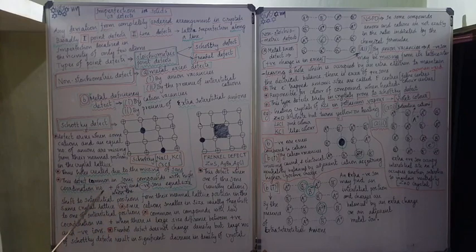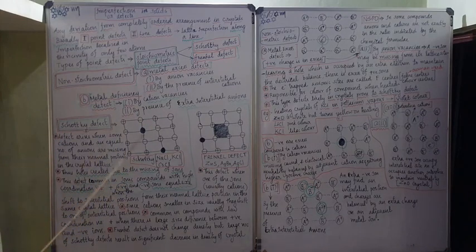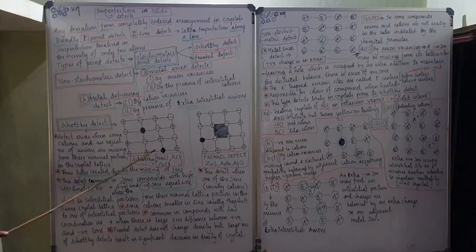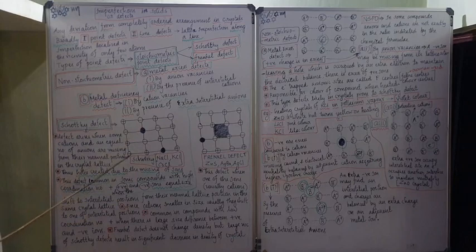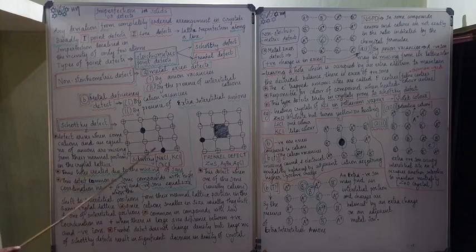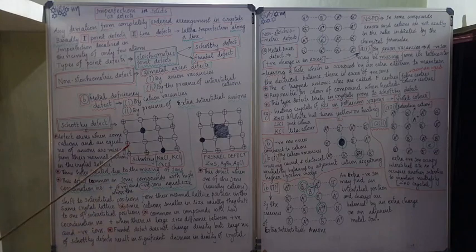Schottky defect arises when some cations and an equal number of anions are missing from their normal lattice positions, creating holes. This defect is common in ionic compounds with a high coordination number — meaning a large number of neighboring particles — and occurs when the positive and negative ions are nearly equal in size.